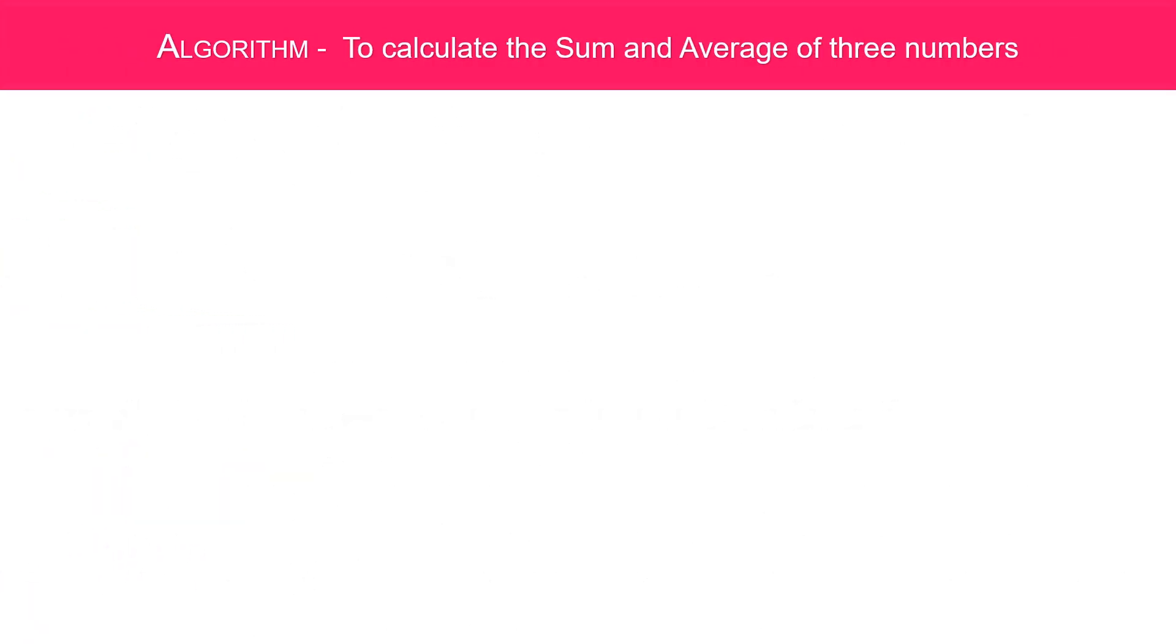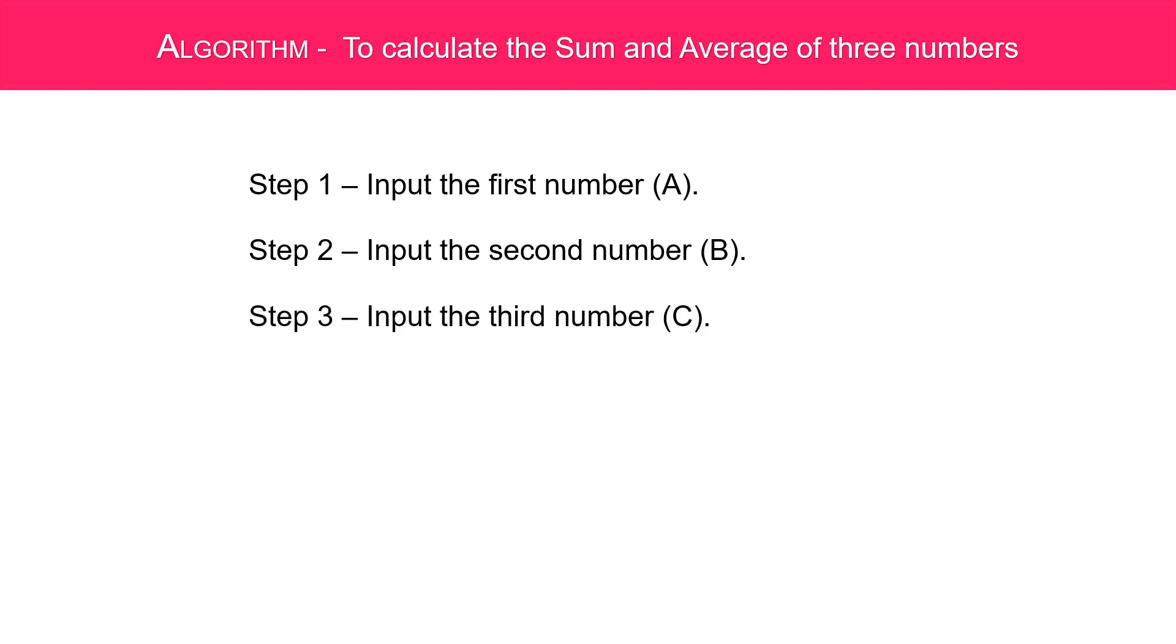Algorithm to calculate the sum and average of three numbers. Let's begin. Step 1: input the first number, say A. Step 2: input the second number, say B. Step 3: input the third number, say C.